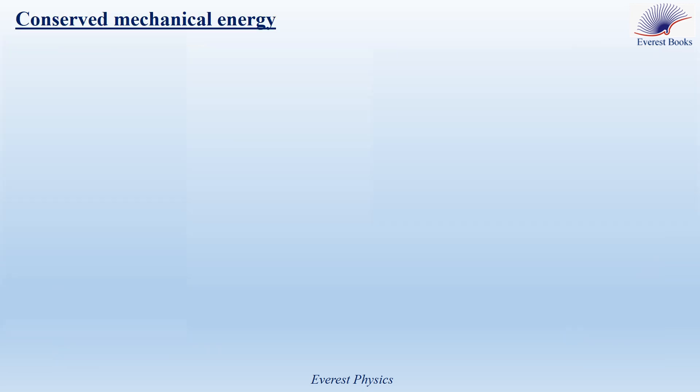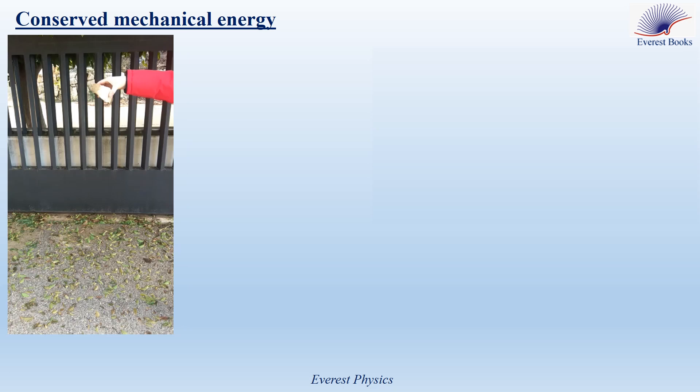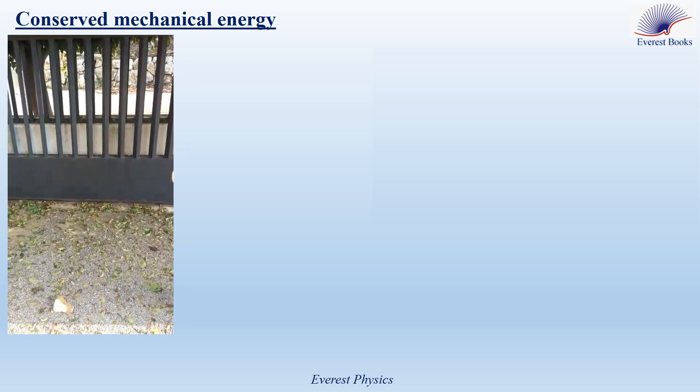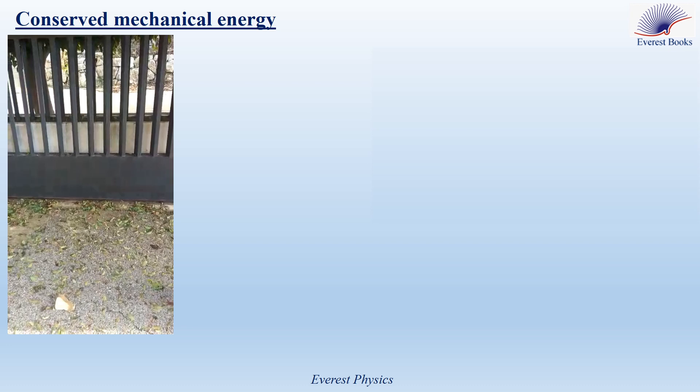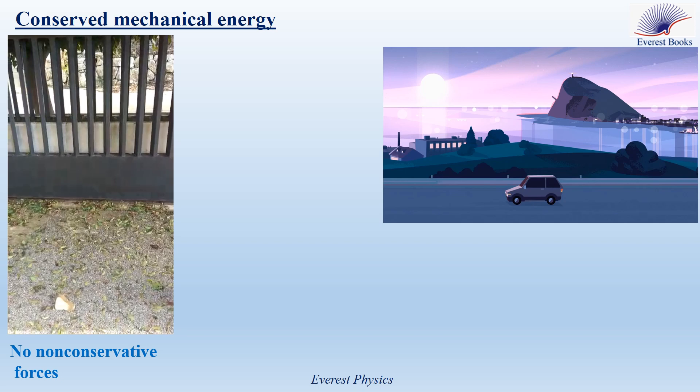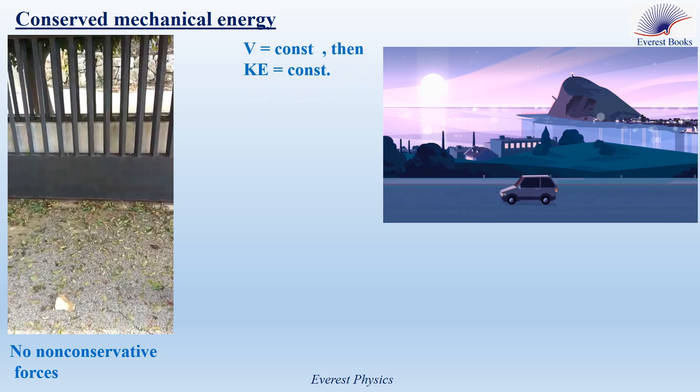This is important. Now, let's move to conserved mechanical energy. Consider a freely falling object. The forces of interaction in the stone-earth system are gravitational forces, which are conservative forces. In this example, the mechanical energy is conserved because there are no non-conservative forces acting in the system. Now, look at the car — it moves with a constant speed, so its kinetic energy is constant.